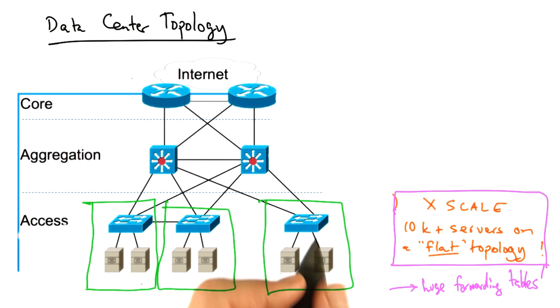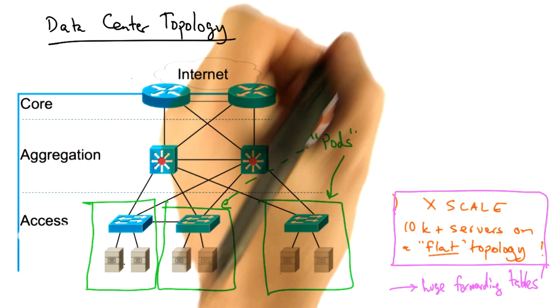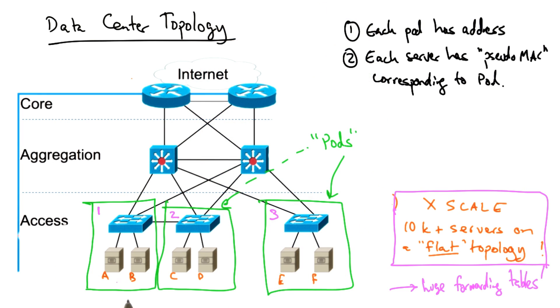One solution is to introduce what are called pods, and assign pseudo MAC addresses to each server corresponding to the pod in which they're located in the topology. So in addition to having a real MAC address, each server has what's known as a pseudo MAC address, as shown in pink.